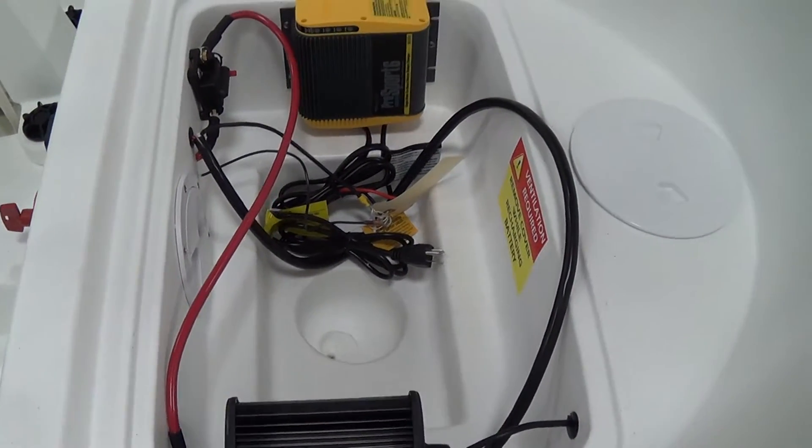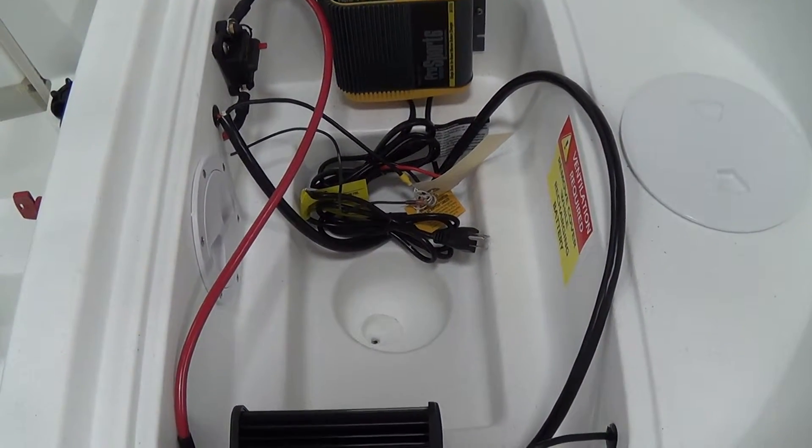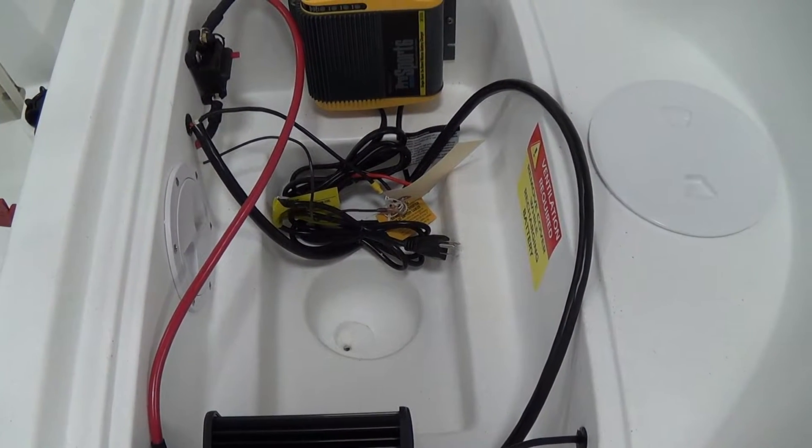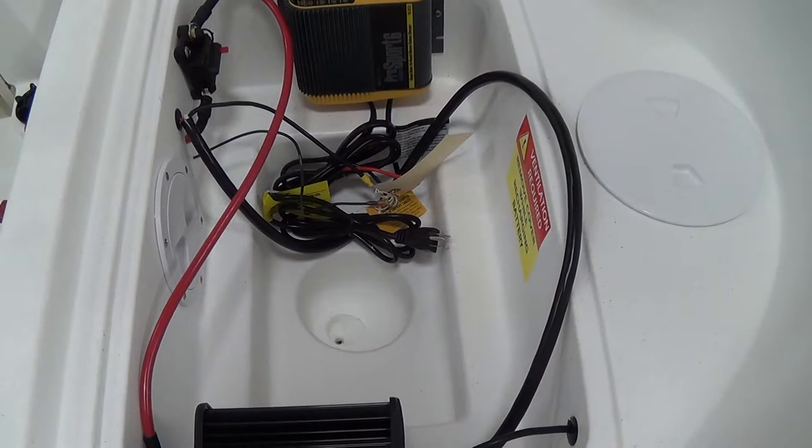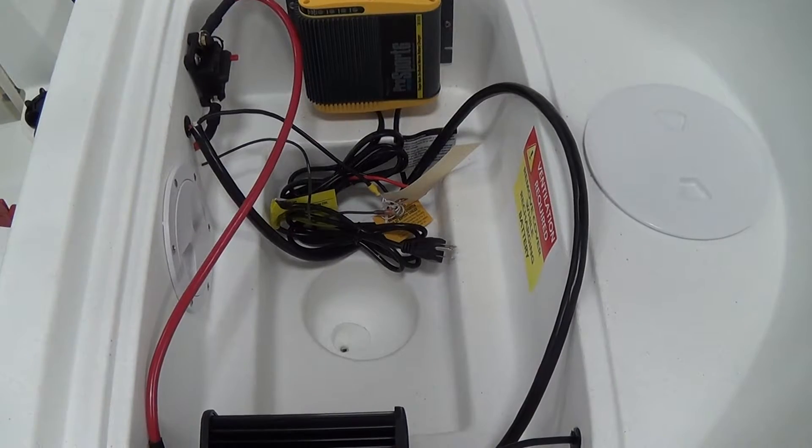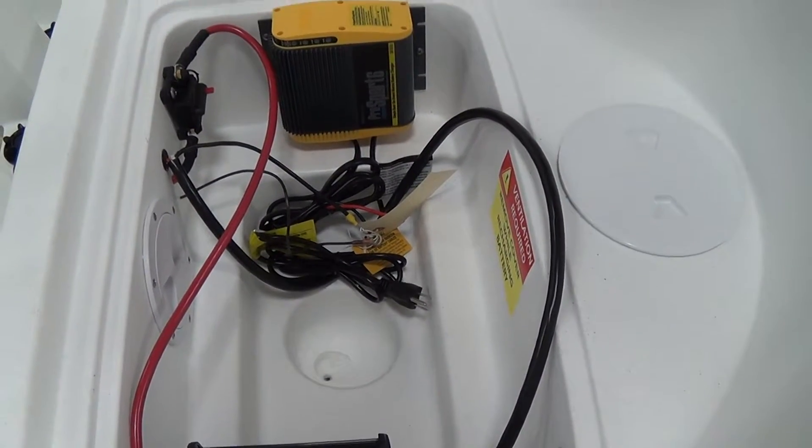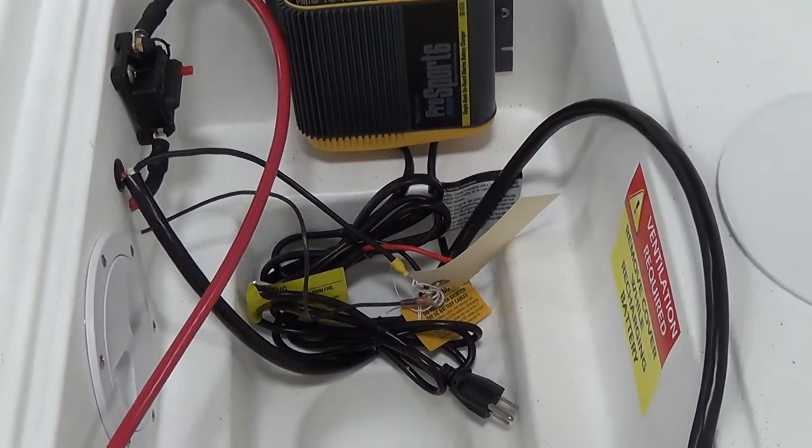It's okay for the battery to sit in the water while the boat is in the lake, so you don't have to worry about it shorting out or anything. Connect all the black wires to the negative terminal and all the red wires to the positive terminal of the battery.